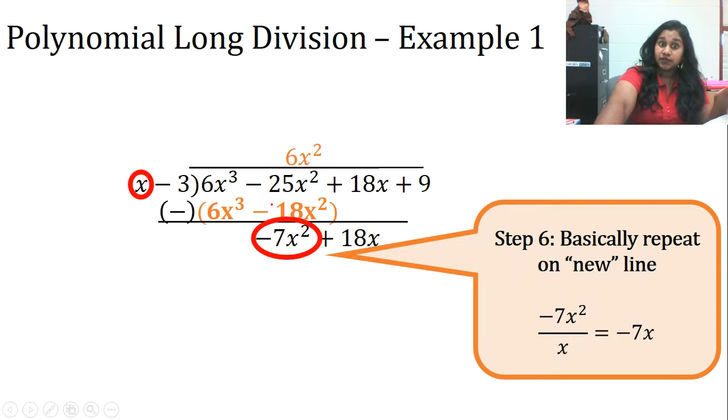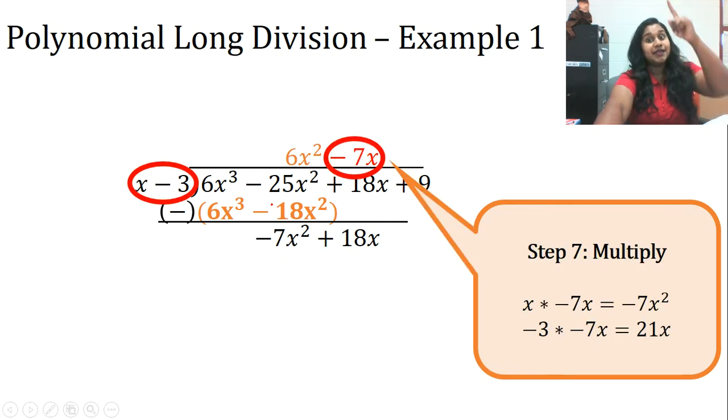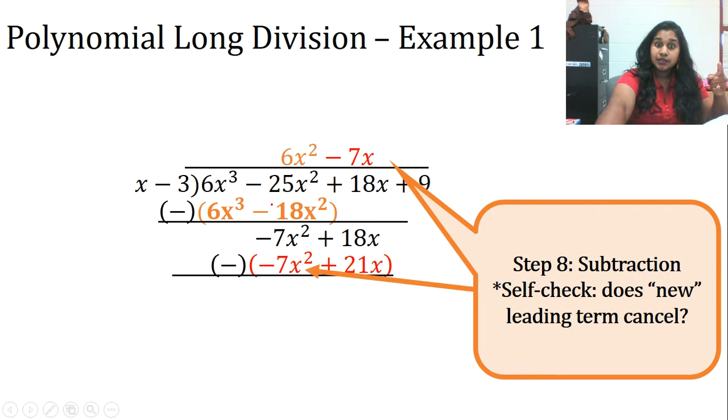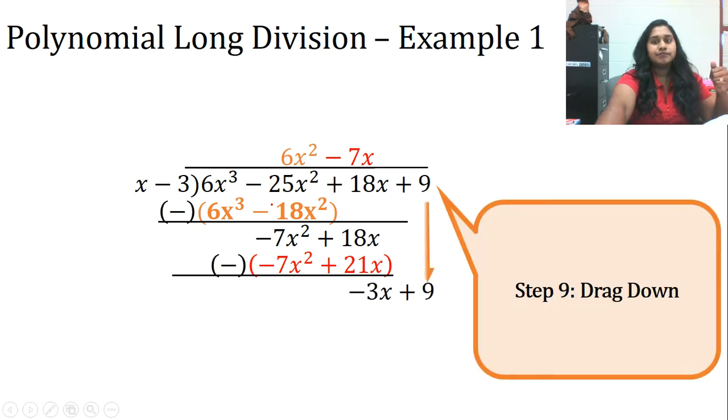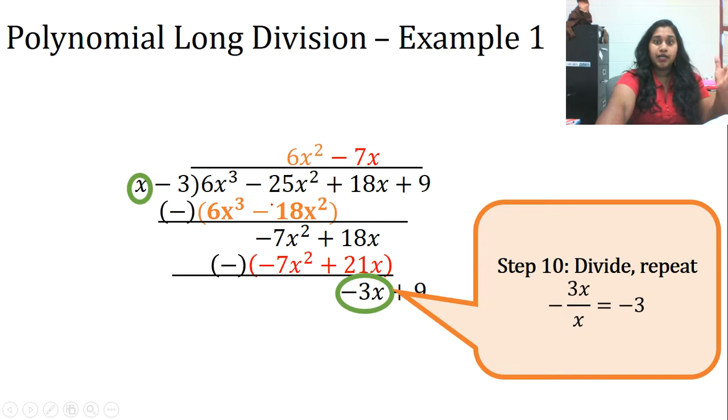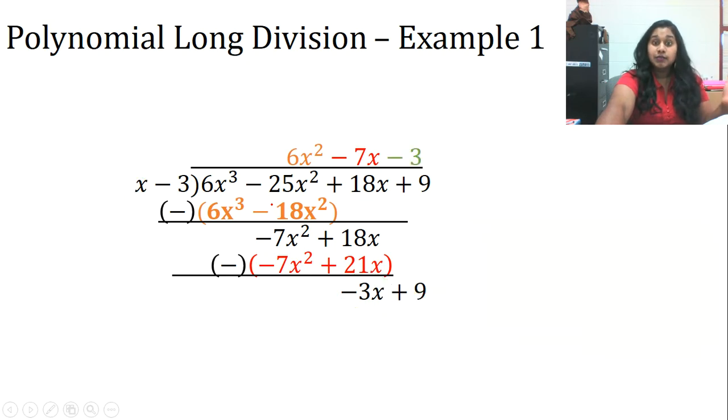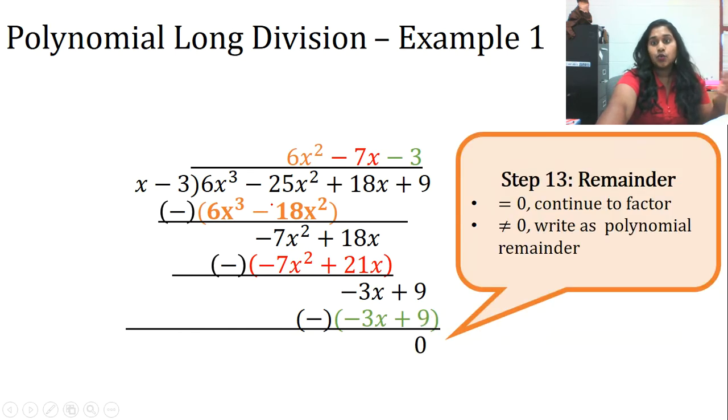So I dragged it down. And now I'm going to repeat. So divide. Negative 7x² by x gives me negative 7x. I place it in the correct column. Then I multiply, subtract, and drag down again. All right. One more time. Divide. Place it in the correct column. Multiply. Subtract. And this time we're going to verify because we're at the end. We're at the last one that we dragged down. So two things about the remainder. If it was 0, we're good. That's it. Continue to the slide where I'm going to show you how to finish the problem. If it didn't equal 0, we would write it as a polynomial remainder. And I've got a slide on that as well. So just be a little patient.